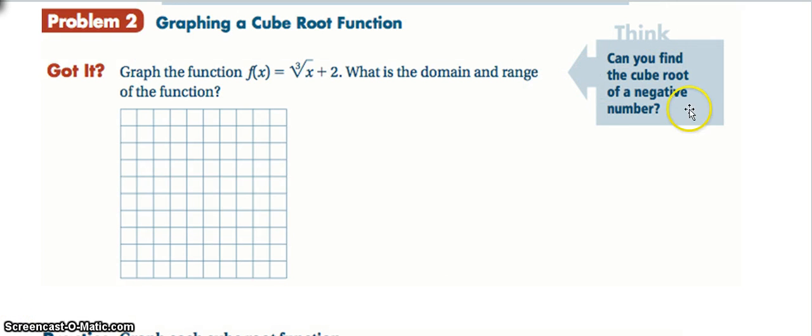So then I already gave away the think right here. But yes, we can find the cube root of a negative number. It just spits out a negative number. So go ahead and think about what does the plus 2 outside the radical do here? And then what does that make the domain and the range?